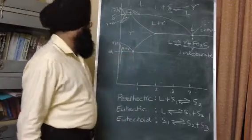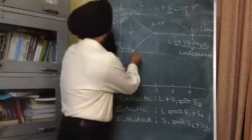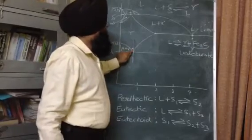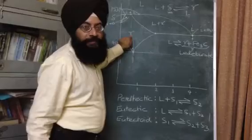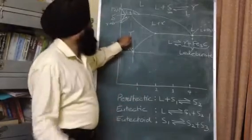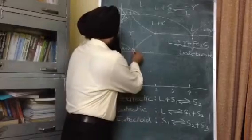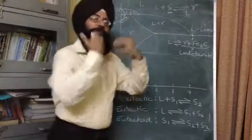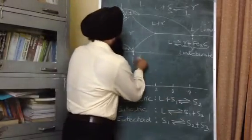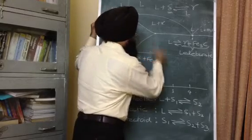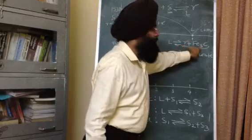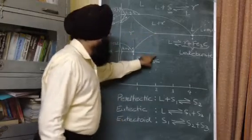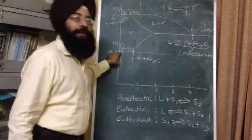Now coming to the third reaction — the eutectoid reaction. Just above the eutectoid point for this particular alloy of eutectoid composition, the phase present is gamma austenite, which is the FCC solid iron solid solution. When you cool the alloy below this temperature, this gamma solid gets converted into two different solids: alpha ferrite plus cementite. The eutectoid line goes into the alpha ferrite phase.